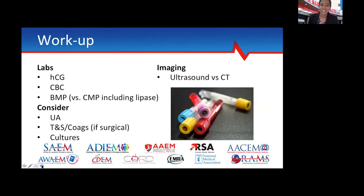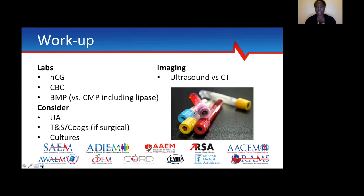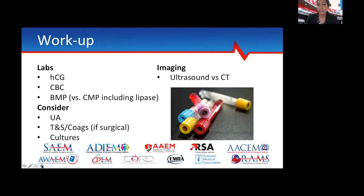For the workup: first, a urinary pregnancy test. Then basic screening labs — CBC and BMP. There's no upper belly tenderness, nothing postprandial, so biliary or pancreatitis is less likely; no need for a full CMP with LFTs and lipase to start. No urinary symptoms, so a urine sample can be considered. If she has a surgical belly, draw and hold type and screen and coags. For definitive diagnosis, at 80 kg, ultrasound won't be helpful — proceed with CT abdomen and pelvis with contrast to rule out appendicitis.